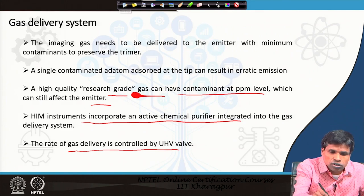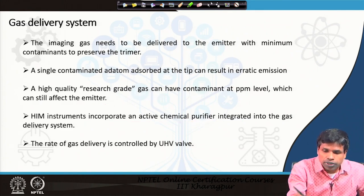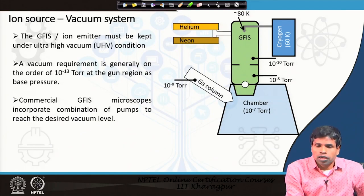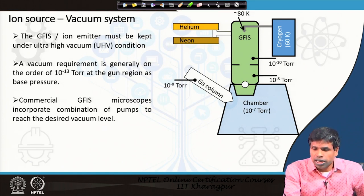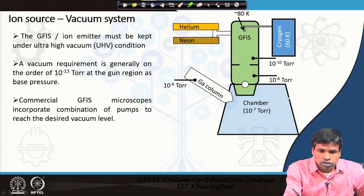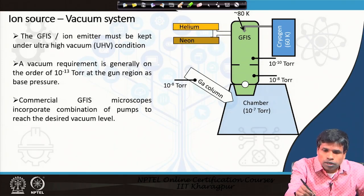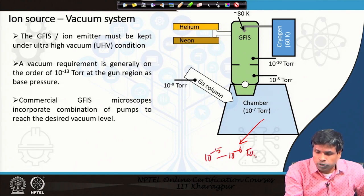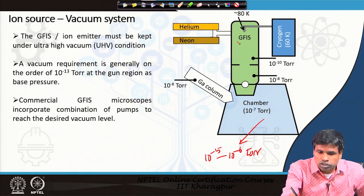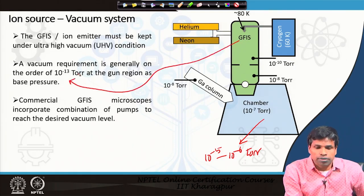We also have a vacuum system with several vacuum pumps: mechanical pump, turbo pump, and ion getter pump, each operating at different vacuum levels. In the specimen chamber for the helium ion microscope, the pressure is in the range of 10⁻⁵ torr, somewhat better than the SEM. The pressure at the gas-filled ionization source is approximately 10⁻¹³ torr — very high vacuum — though when gases are introduced that pressure rises.